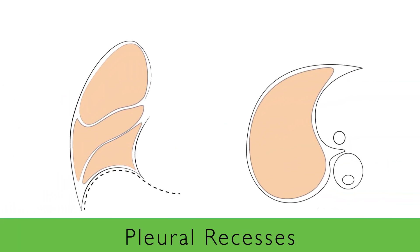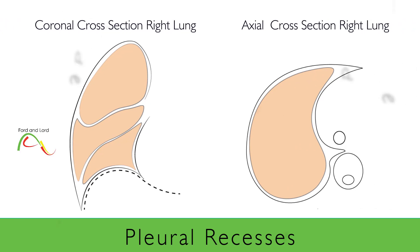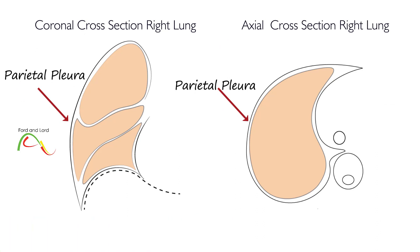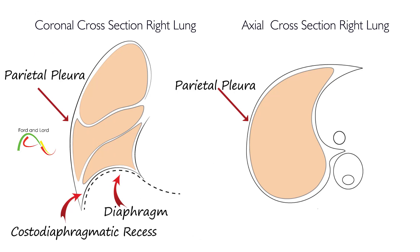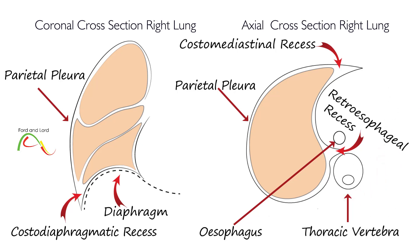Pleural recesses are parts of the pleura where the pleura does not completely surround the lungs, especially during expiration. This is where the opposing surfaces of the parietal pleura come in contact with each other — in contrast to the fissures, where only the visceral pleura comes in contact with each other. The term recess is sometimes also used for fissures created by the visceral pleura, which is controversial. The term pleural recess is mainly related to areas where the parietal pleura makes sharp turns and comes in contact with each other.